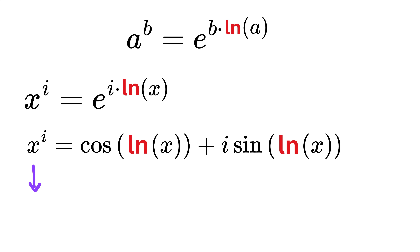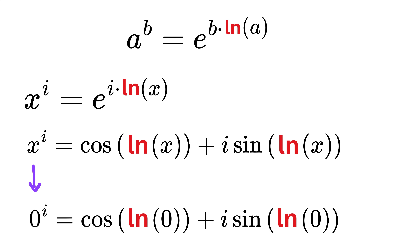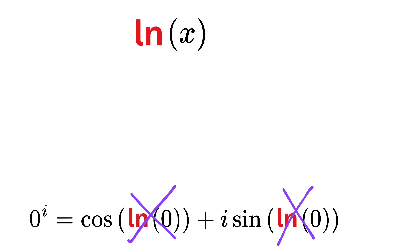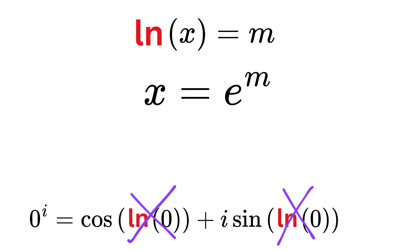Now, if we plug the value of x as 0 into this formula, we run into a problem because this becomes the natural log of 0, which is undefined. This is because if the natural log of x equals any value m, then we have the relation x equals e raised to the power m. There does not exist any real or complex number m such that e raised to m equals 0, which is why the natural log of 0 is undefined.